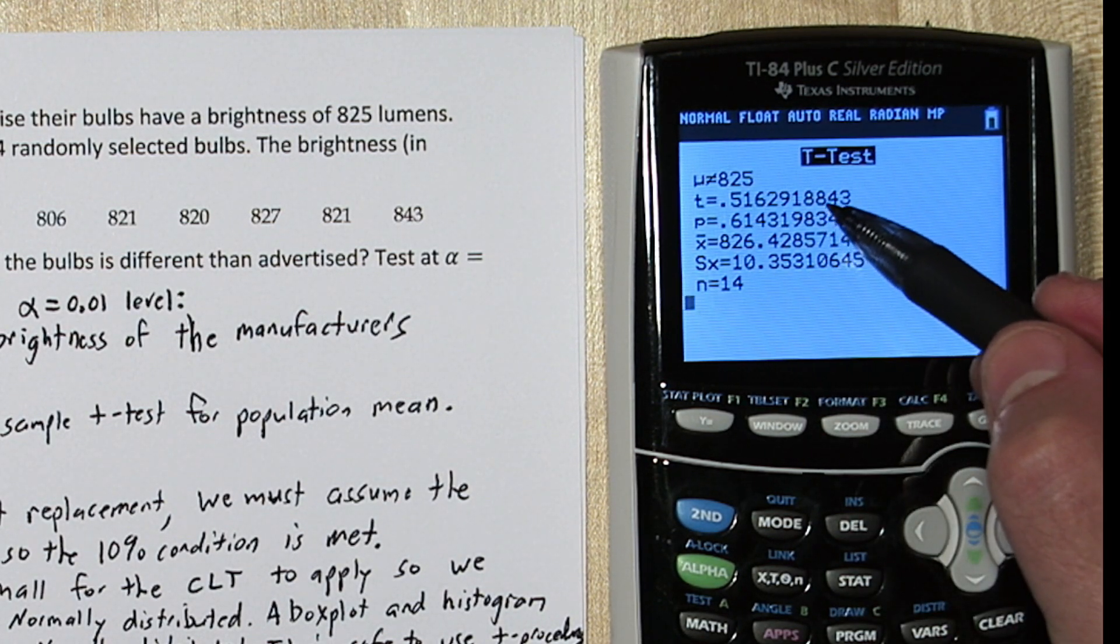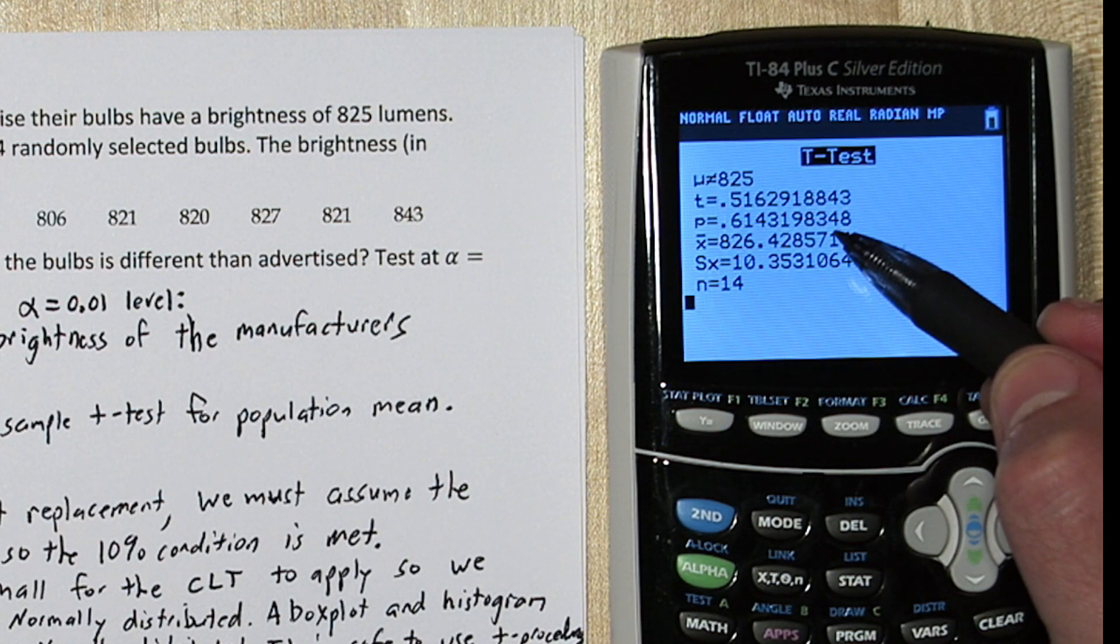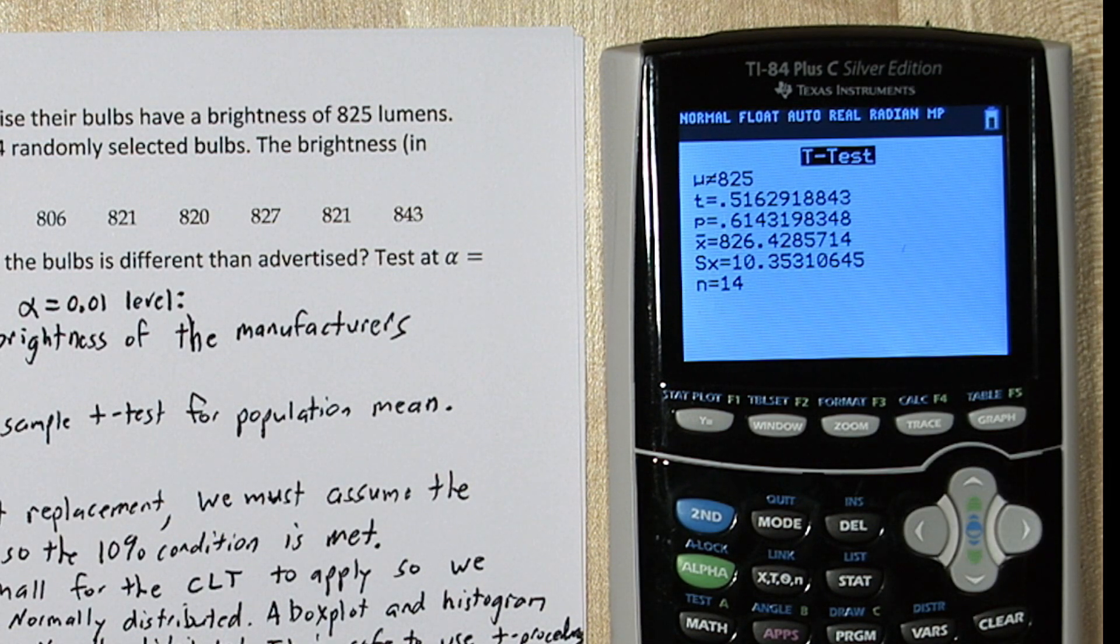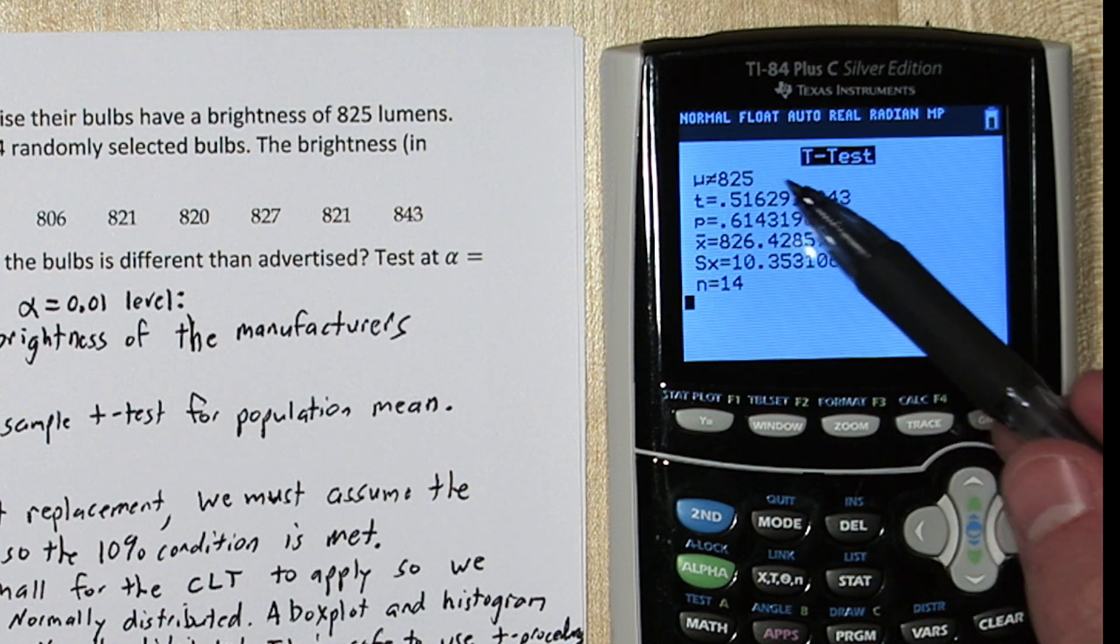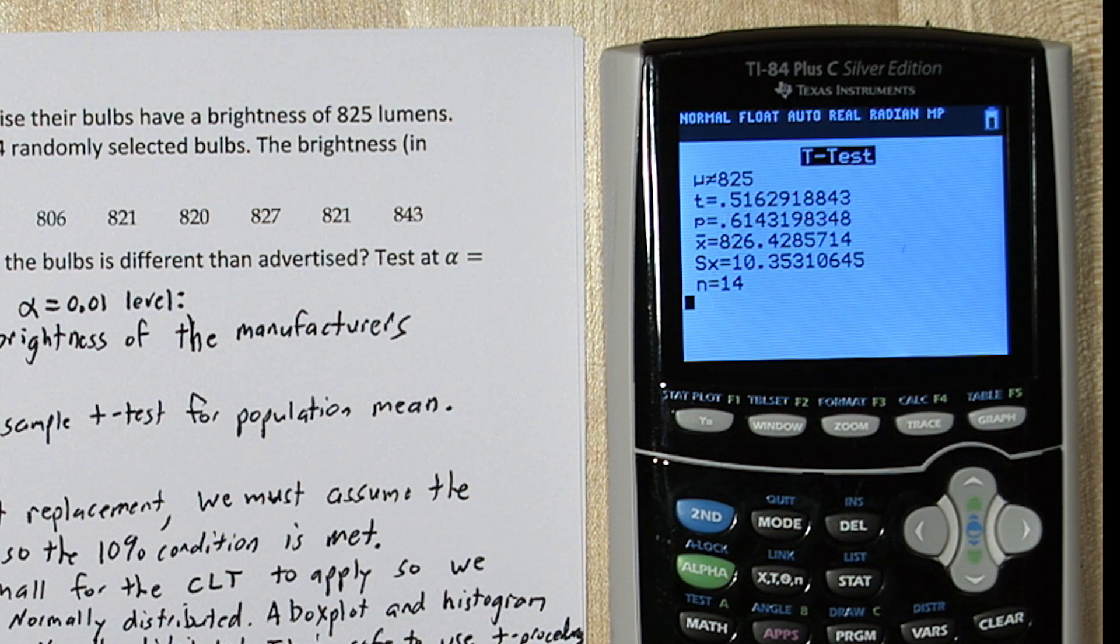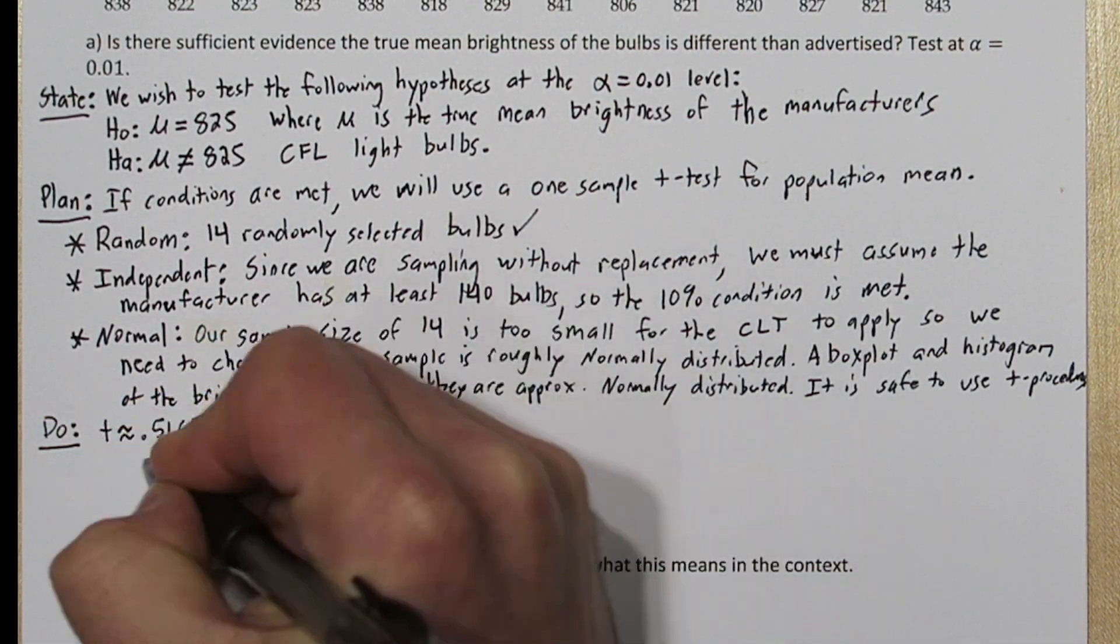here's our test statistic, 0.516 approximately, and our p-value, 0.614. That's a really high p-value, so it doesn't look like we had much evidence. That's probably because our sample mean was 826.4. That's really close to the 825. So let's write all this information down in our do step.